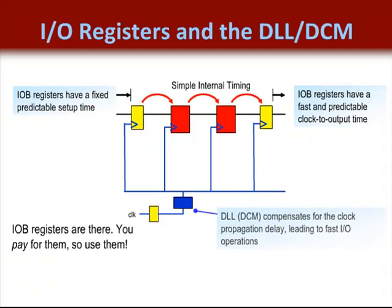You should also know that the DLL, that is the Digital Clock Manager resources, compensates for the clock propagation delay, which improves your IO timing. All Xilinx devices are equipped with delay lock loops or DLLs, or Digital Clock Managers, which enable the clock inputs to the device to be conditioned. Although they can be used to multiply the clock frequency and generate multiple clock phases, the most fundamental reason for using them should be to obtain deterministic input and output timing of the device. Make sure you use the DLL to compensate for your clock delay.